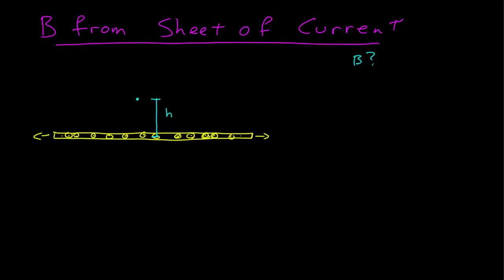Let's stick with our picture and try to understand what's going on. First, I'll set up a coordinate system: this is the positive x, this is the positive y, and we'll have positive z out of the screen. So the current is in the positive z direction. We want to know the magnetic field at some height y above the sheet.